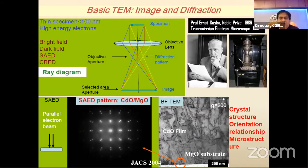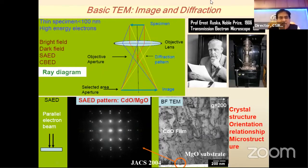Coming to the transmission electron microscope: in SEM we look at surface microstructure and surface chemistry, but in TEM the electron beam passes through the specimen, so the specimen must be very thin — around 50 to 100 nanometers for routine TEM, and 5 to 10 nanometers for atomic-scale microscopy. The most important modes are bright field, dark field, selected area electron diffraction (SAED) in reciprocal space, and convergent beam electron diffraction (CBED) for understanding symmetry.